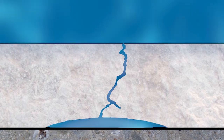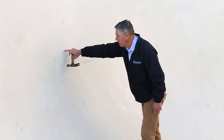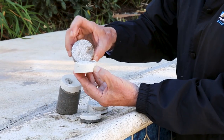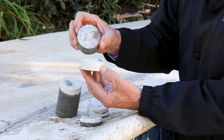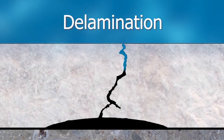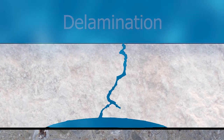The secondary deposit that forms in the gap may or may not be calcium hydroxide. It could be ettringite, calcium carbonate, gypsum, or any other number of secondary deposits that are usually salts of calcium — of which calcium hydroxide really isn't a salt by a chemist's definition. Either way, it's being dissolved and brought to the surface.